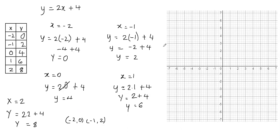Now let's go ahead and graph these points on the coordinate plane. The first point, negative 2 comma 0, has x equal to negative 2 and y equal to 0. Then negative 1 comma 2, then 0 comma 4 where x is 0 and y is 4. Next is 1 comma 6. The point 2 comma 8 is off my graph so I'll skip it. Now I draw a line passing through all these points and we get a nice straight line. That's how you graph a linear equation using an XY table.